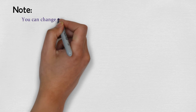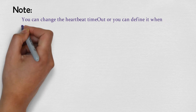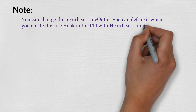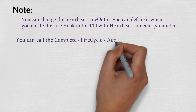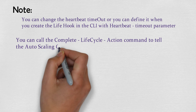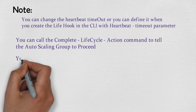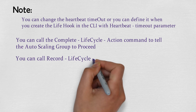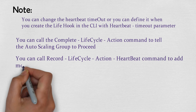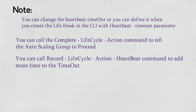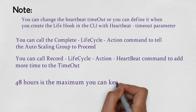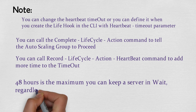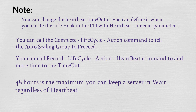You can change the heartbeat timeout, or you can define it when you create the lifecycle hook in the CLI with the heartbeat timeout parameter. You can call the complete lifecycle action command to tell autoscaling to proceed, and you can call the record lifecycle action heartbeat command to add more time to your EC2 instance for the timeout. The maximum you can put the server in a waiting state is 48 hours, regardless of heartbeat.